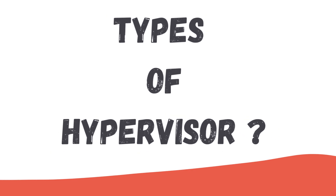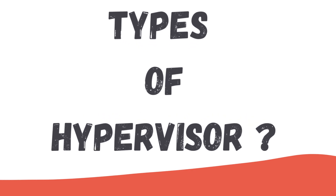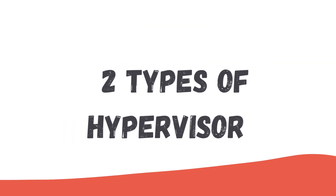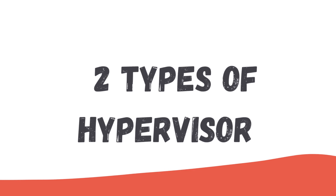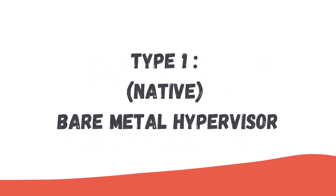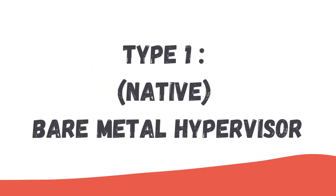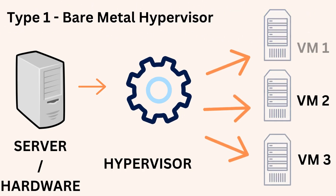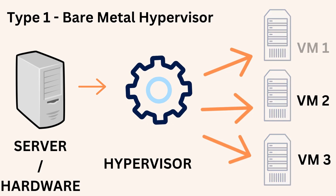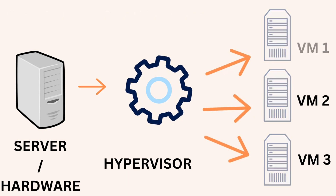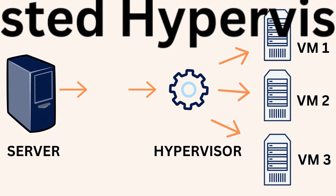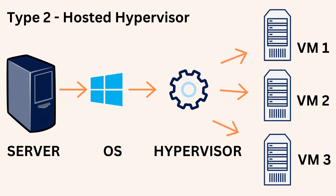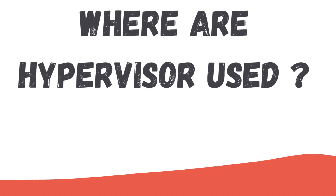What types of hypervisors exist? There are two main types of hypervisors available today. One is the native, bare metal hypervisor, which runs directly on the hardware. The other is the hosted hypervisor, which runs on top of a host operating system.